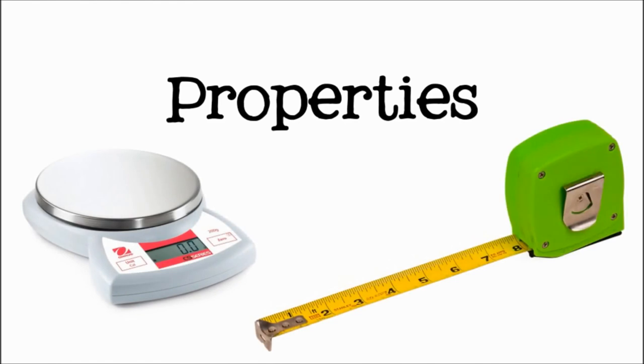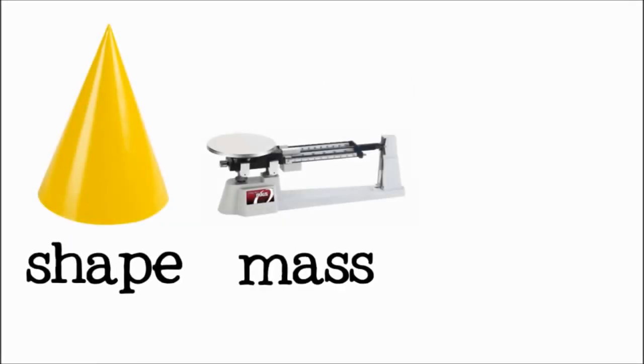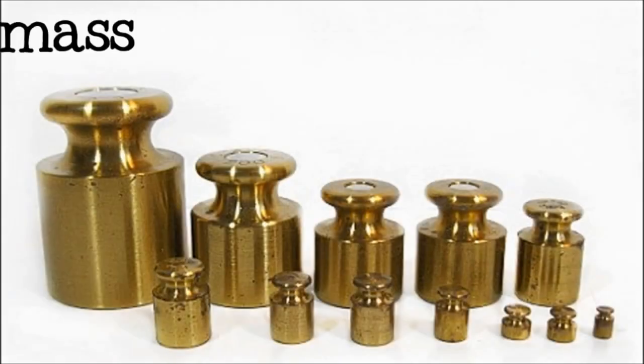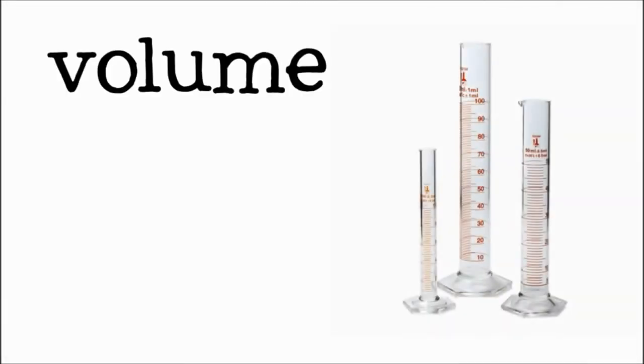A property is the way that something is that we can measure. The physical properties we will look at to determine state of matter are shape, mass, and volume. Mass is the amount of matter in an object. Volume is how much space that matter takes up.